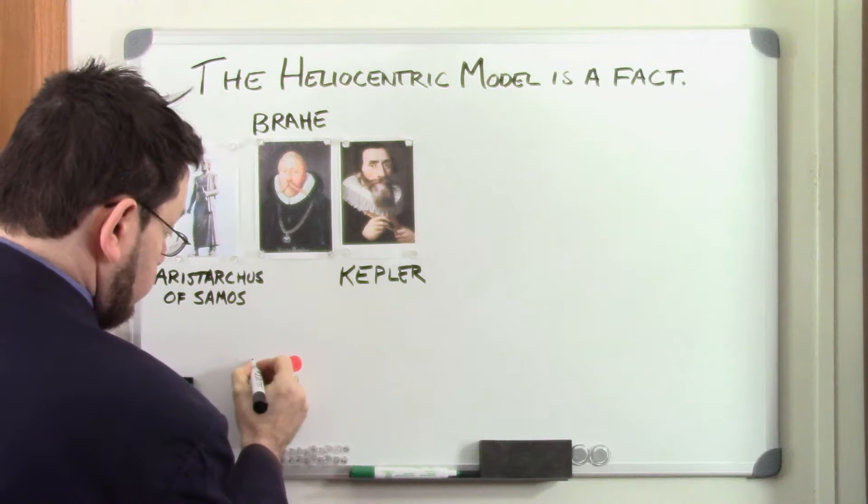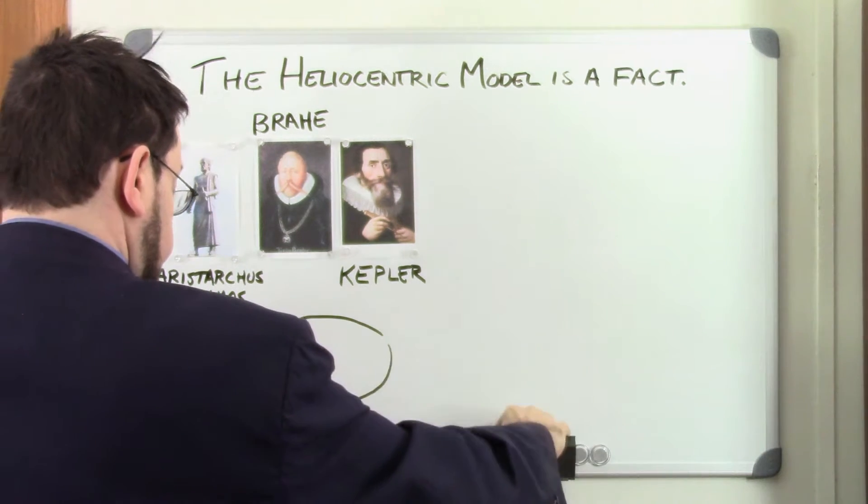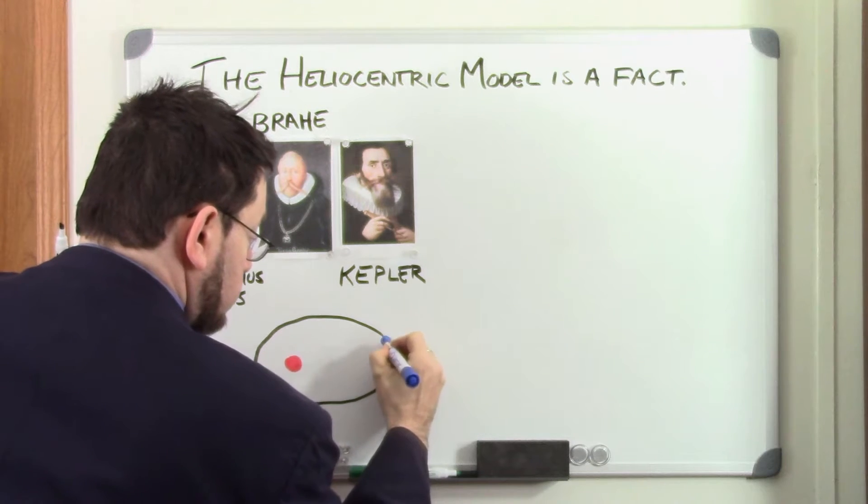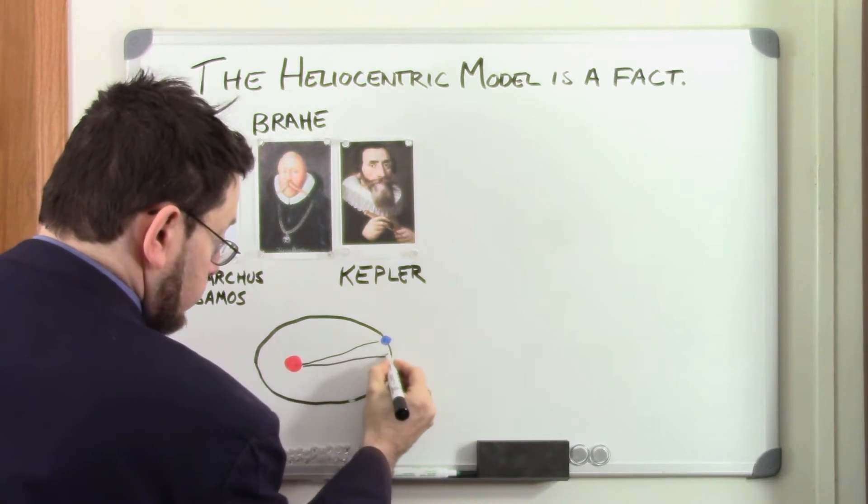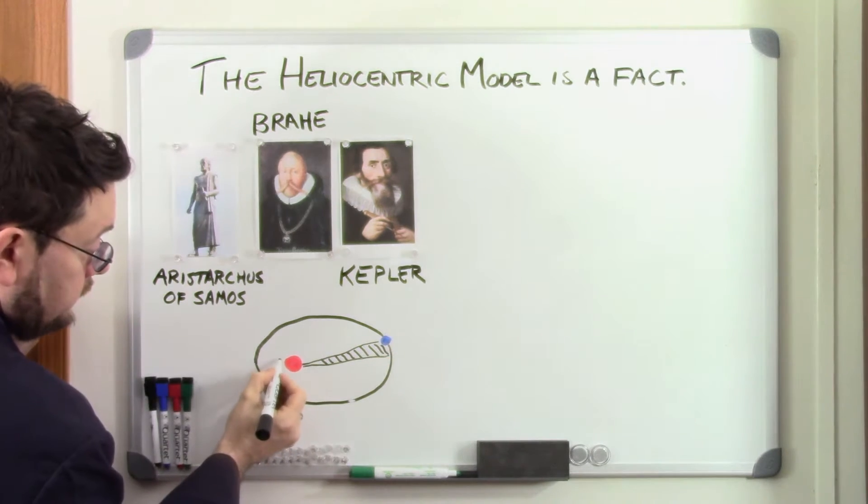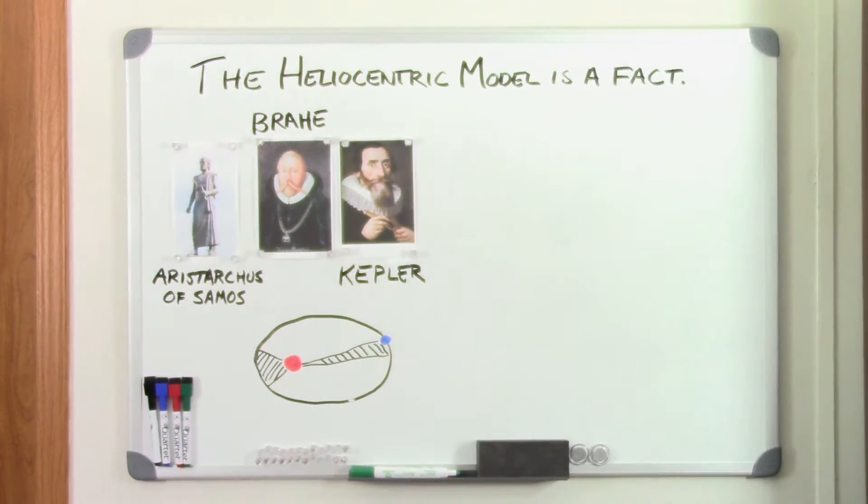It was Kepler's laws of planetary motion that really put the last nail in the coffin of the geocentric, or earth-centered, model of the world. The math simply did not work with the earth at the center. What Brahe observed was just what we would expect to see if the planets orbited the sun according to Kepler's laws.